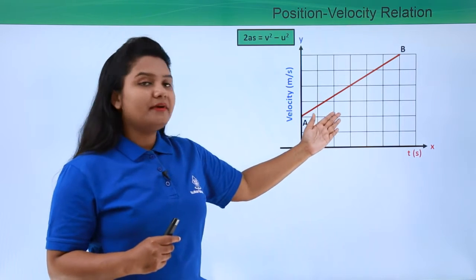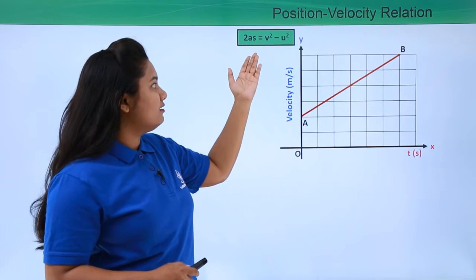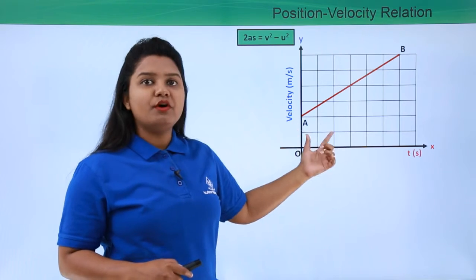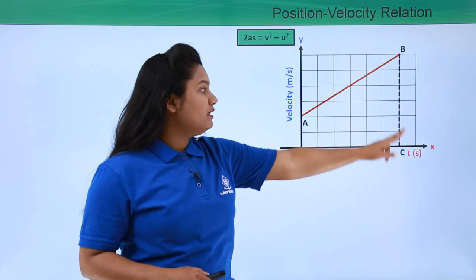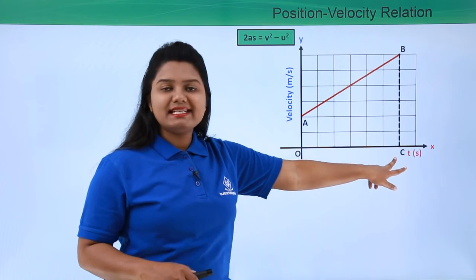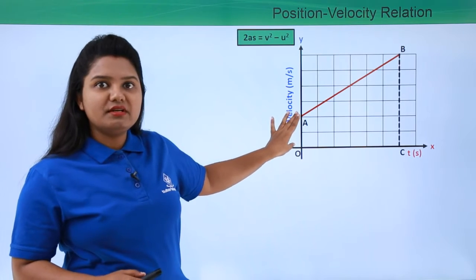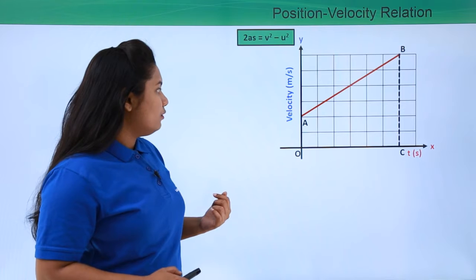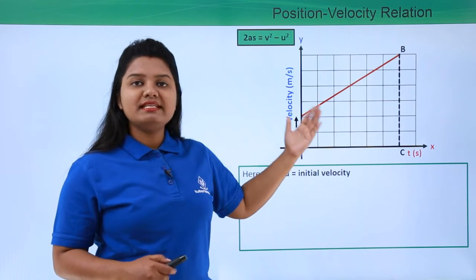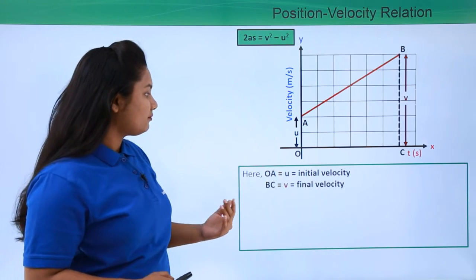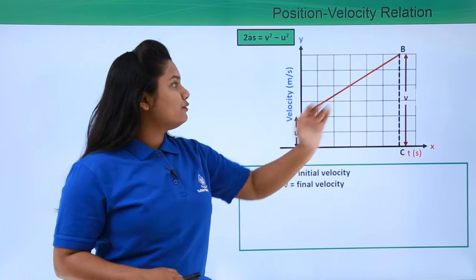Here I have a velocity-time graph which is AB. In order to derive this expression, we will be finding out the displacement of the body from point A to point B. For that, we will be drawing one perpendicular from point B towards the x-axis, and the point where it touches the x-axis, let it be C. The body has some initial velocity taken as u, so OA equals u. The final velocity is given by the length BC, which is v, and OC denotes the time taken by the body from point A to reach point B.